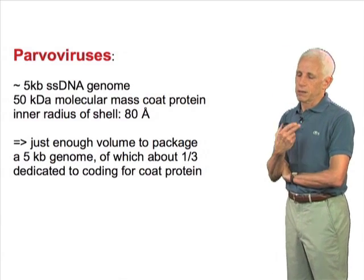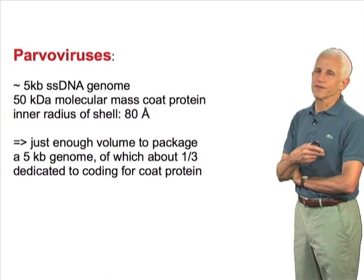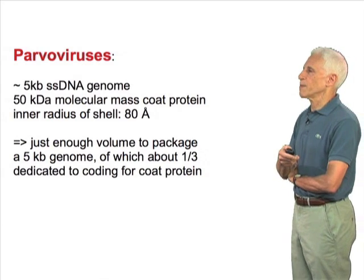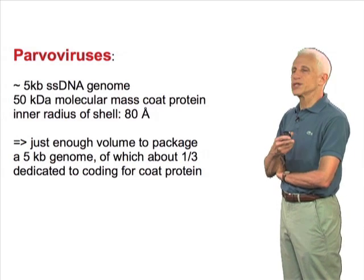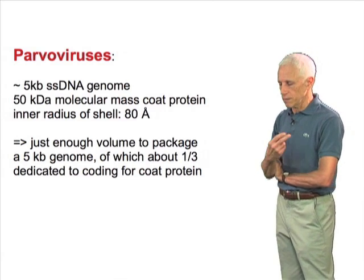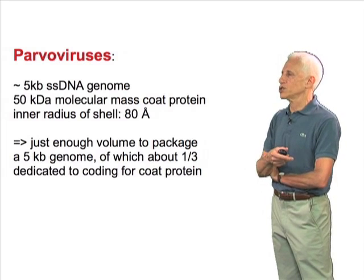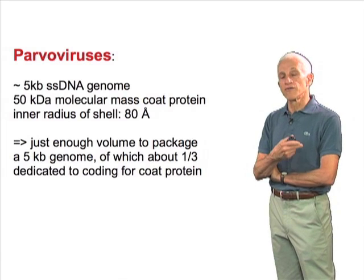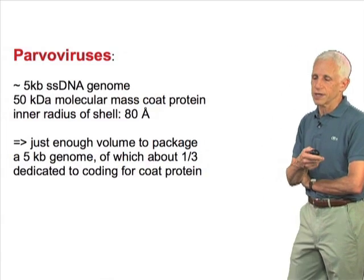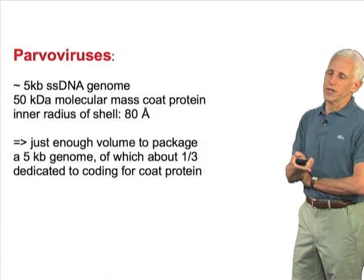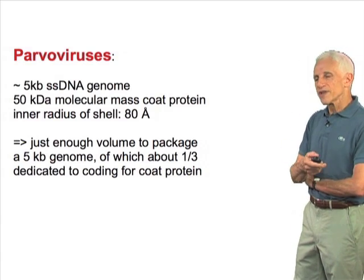Since the molecular mass of the coat protein is about 50 kilodaltons, there's just enough volume inside to package that genome, of which about a third is actually given over to encoding for the coat protein.